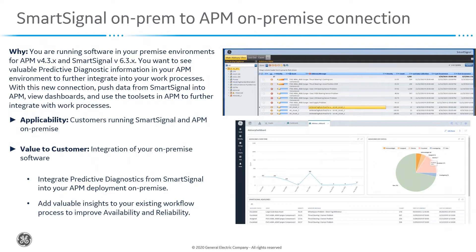and other things that help improve the condition monitoring of your assets. This applicability is for customers who are running SmartSignal and APM on-premise, and the value is to integrate those two on-premise solutions, bringing predictive diagnostics from SmartSignal into APM to improve the availability and reliability of your sites.